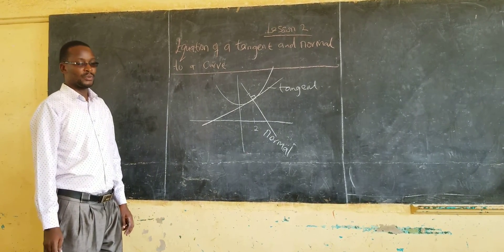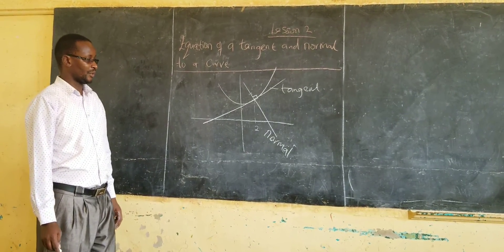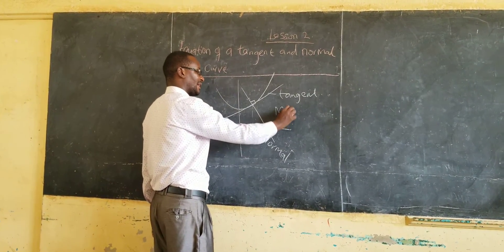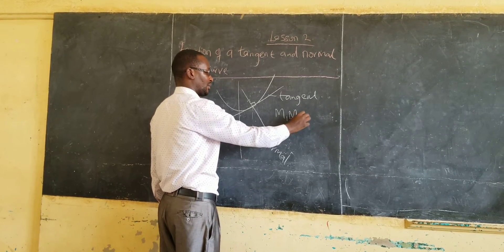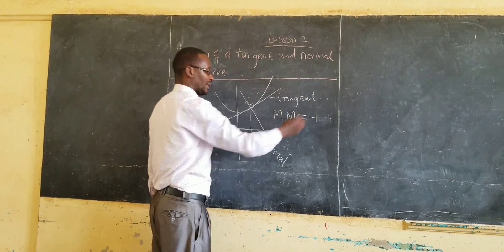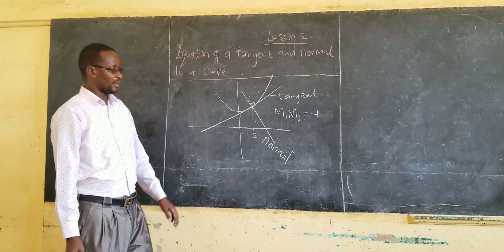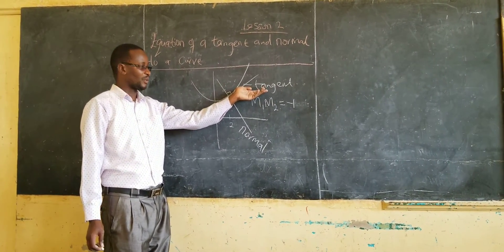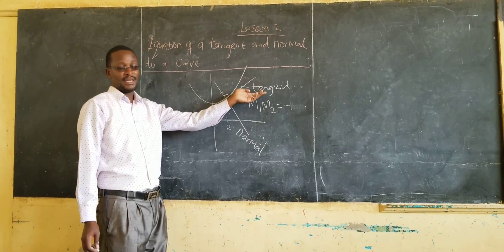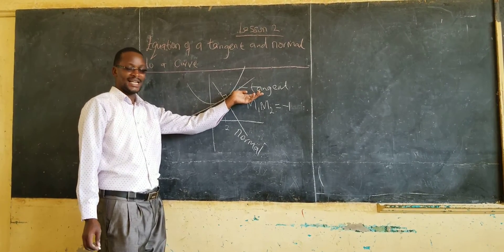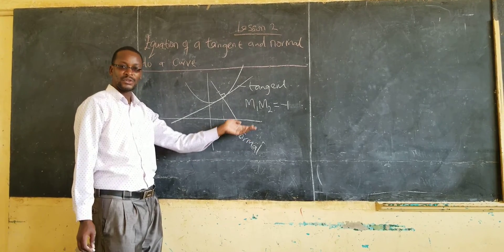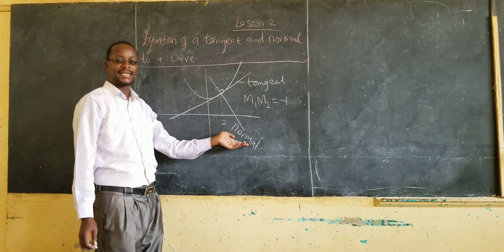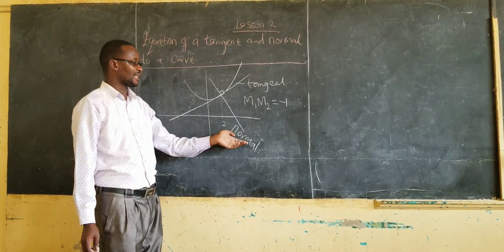From your knowledge on equations of a straight line, you know that for perpendicular lines, the product of the gradients m1 and m2 is equal to negative 1. So, if you are able to know the gradient of the tangent, you can also know the gradient of the normal using this relationship, and for that reason you can get the equation of that normal.